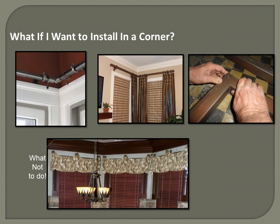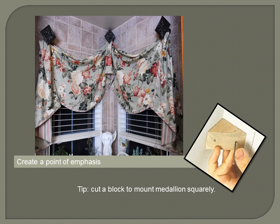For corners you can use elbow sockets, but every time you have a splice, elbow, or socket you need brackets. You can miter them. What you don't want to do is treat the windows individually — it would look so much better with one medallion at each corner of the corner window. To achieve that, cut a block corner piece, mount it into the wall, and now you have a square surface to post your medallion.